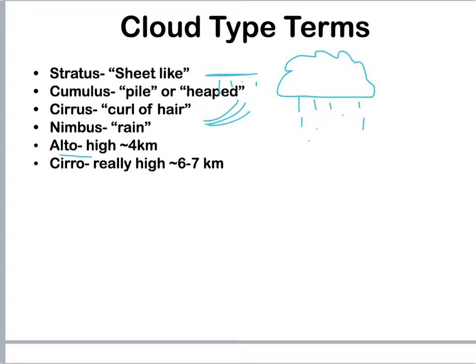Alto means high, so you could have an altostratus cloud or an altocumulus cloud. Cirro is even higher yet — cirrostratus or cirrocumulus.